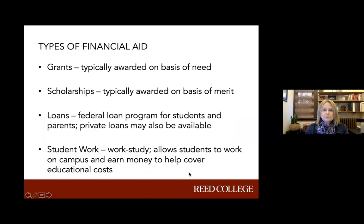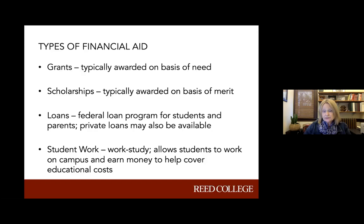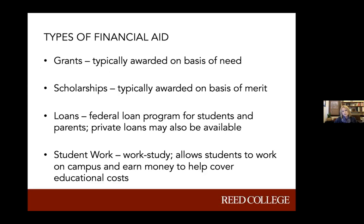Breaking it down further: grants are gift aid, money that does not need to be repaid, typically awarded based on financial need. Scholarships are typically awarded on the basis of merit - a special skill or talent, leadership, music - depending upon what the particular college offers. Some colleges offer merit scholarships; some do not. Some award aid strictly based on demonstrated need and do not award merit. Reed is one of those colleges - all financial aid awarded institutionally at Reed is based on a student's financial situation.